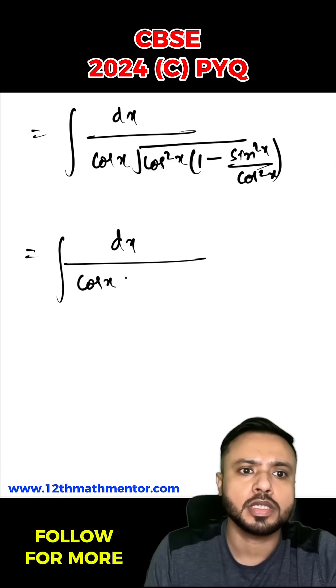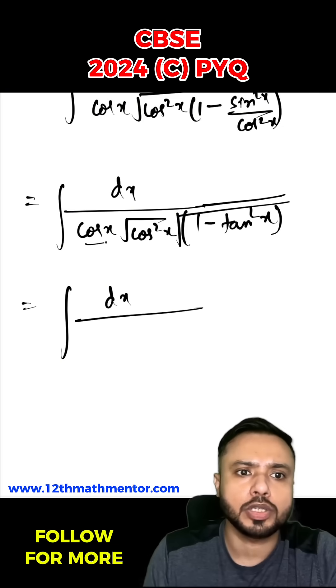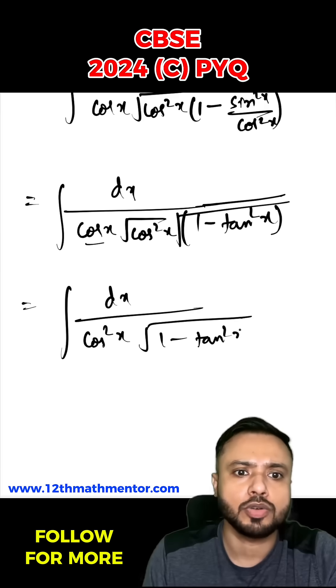So now I can write it as dx by cos x into root of cos²x times (1 minus tan²x). The integral becomes dx by cos²x because root of cos²x equals cos x, giving us 1 by cos²x into root of 1 minus tan²x.